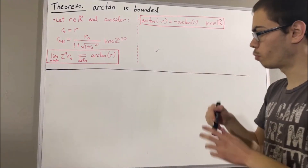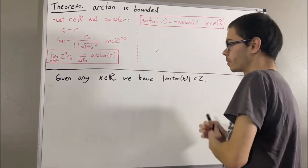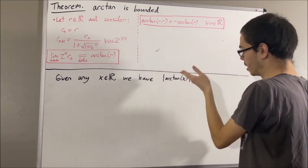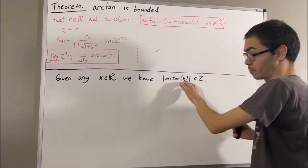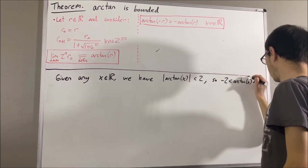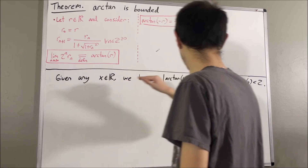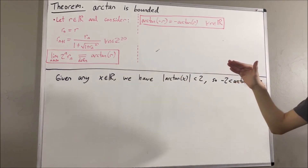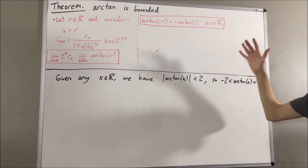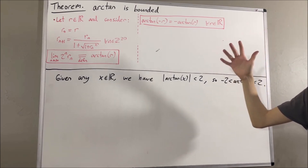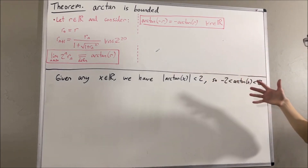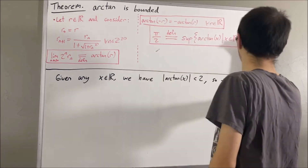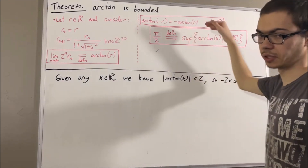So what did we just prove? We proved that given any real number x, the absolute value of arctangent of x is less than 2. A property of absolute values tells us this is equivalent to saying that the arctangent of x lies between negative 2 and positive 2. So given any real number x, the arctangent of x is less than 2, meaning 2 is an upper bound of the arctangent function. From the completeness property of the real numbers, since the arctangent function has an upper bound, it must also have a least upper bound. And so we now define pi over 2 to be the least upper bound of the arctangent function — in other words, we're defining pi to be twice the least upper bound of the arctangent function.